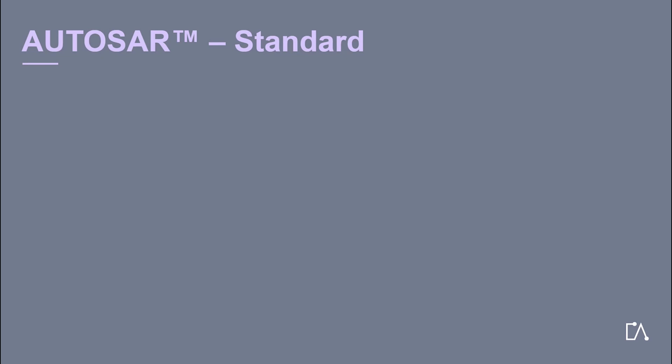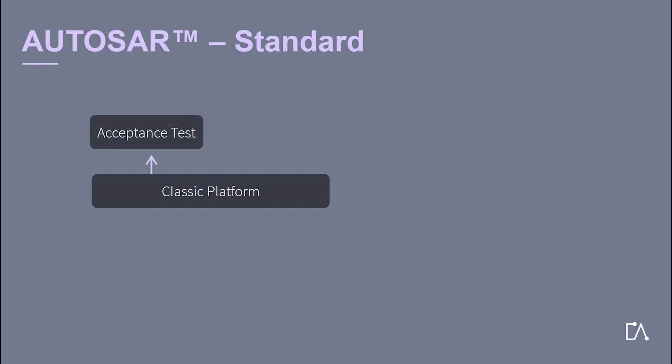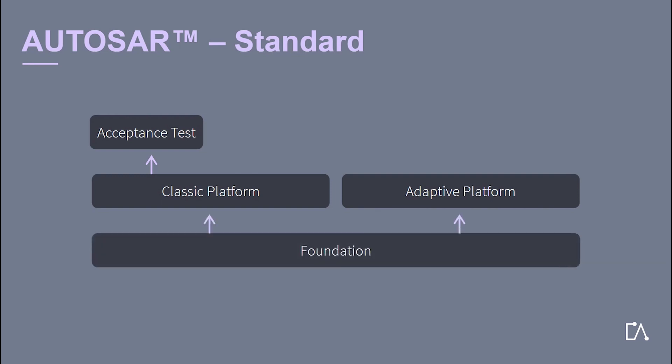The primary goal of the Autosar development partnership is the standardization of basic system functions and functional interfaces. The first standard to be defined was Autosar Classic, and in recent years further standardization has been introduced. A standard for acceptance tests for the Autosar Classic Platform was defined. New use cases required the development of the Adaptive Platform. Having now two Autosar platforms led to the need to ensure interoperability between them, and to meet this requirement the Foundation Standard was introduced. The Application Interfaces Standard was introduced to standardize application interfaces for the Classic Platform.